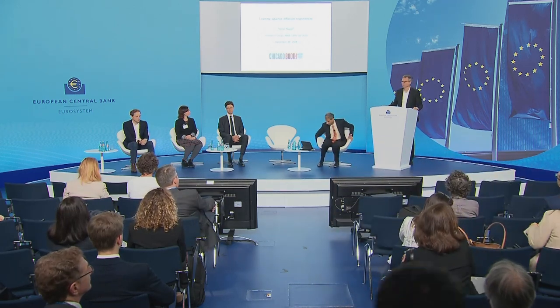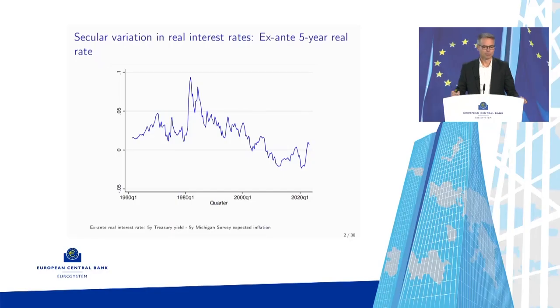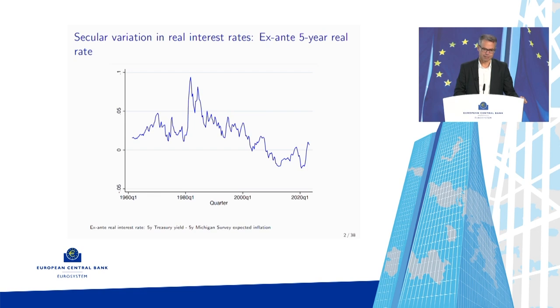Thanks a lot for having me at this wonderful conference. The paper I want to talk about today is trying to understand what you see plotted here in this chart — a series of real interest rates over a five-year horizon, plotted from the early 1960s until very recently. I'm trying to understand not so much the shorter run wiggles, but these slow-moving secular changes: the rise into the 1980s, and then the four-decade decline in rates until very recently.